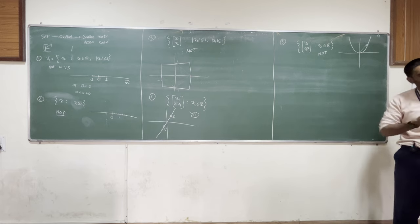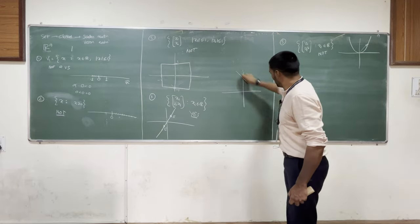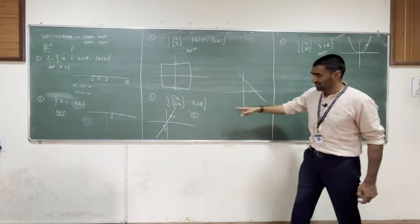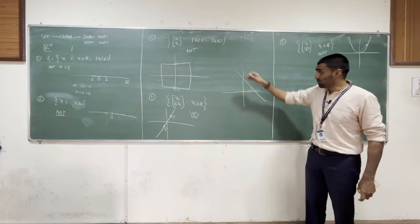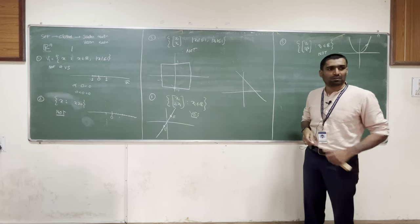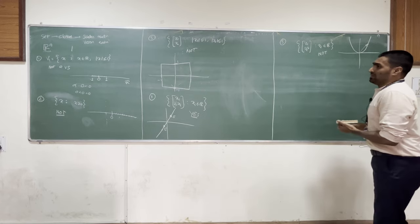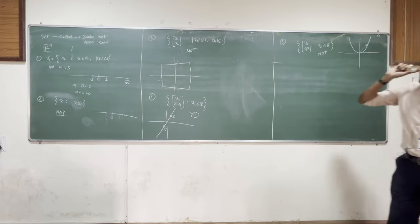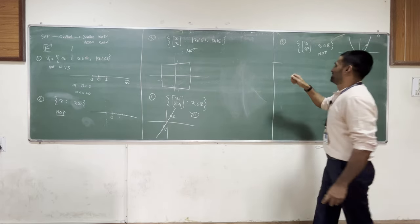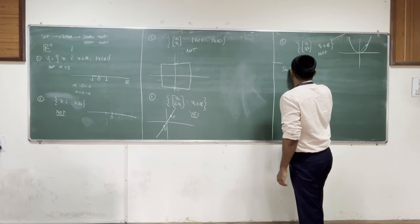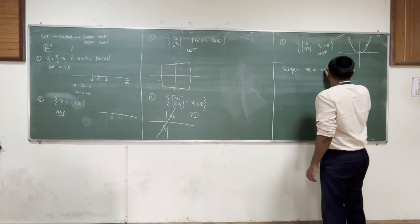Out of all the examples we've seen, it looks like sets that are finite in size don't form vector spaces, and sets with a curved shape don't seem to be vector spaces. But something with a flat shape appears to be a vector space. In fact, that is true: vector spaces are essentially the study of flat spaces in higher dimensions - but flat spaces that pass through the origin. A flat line not passing through the origin is not a vector space.